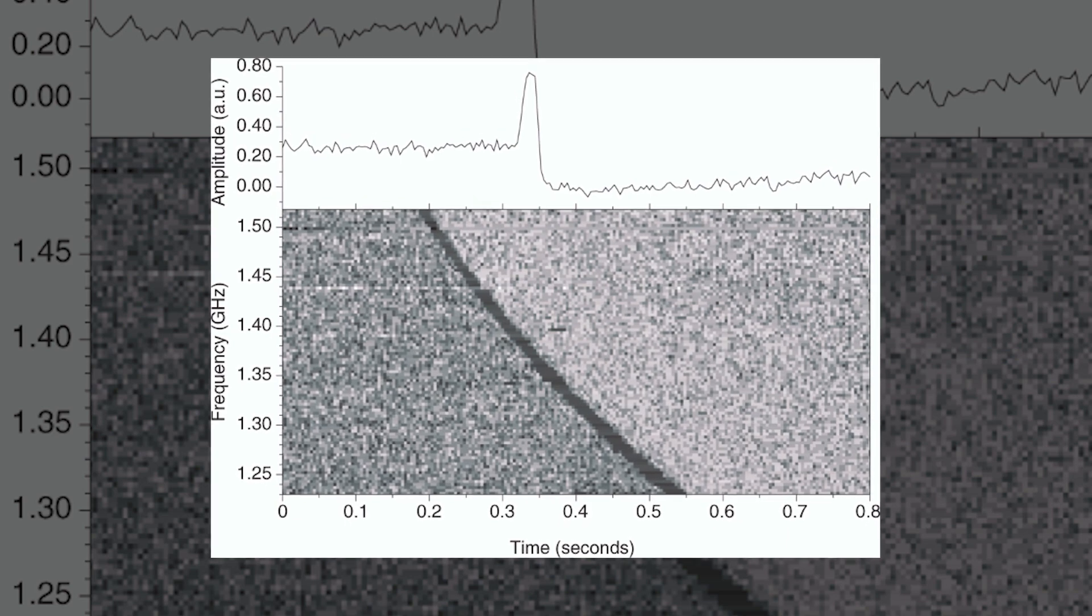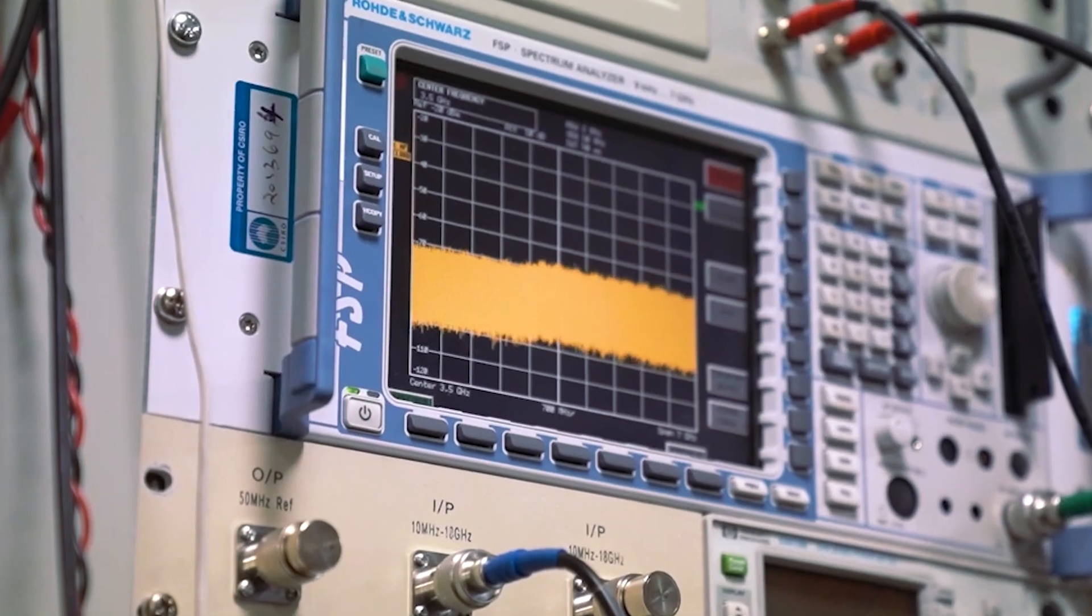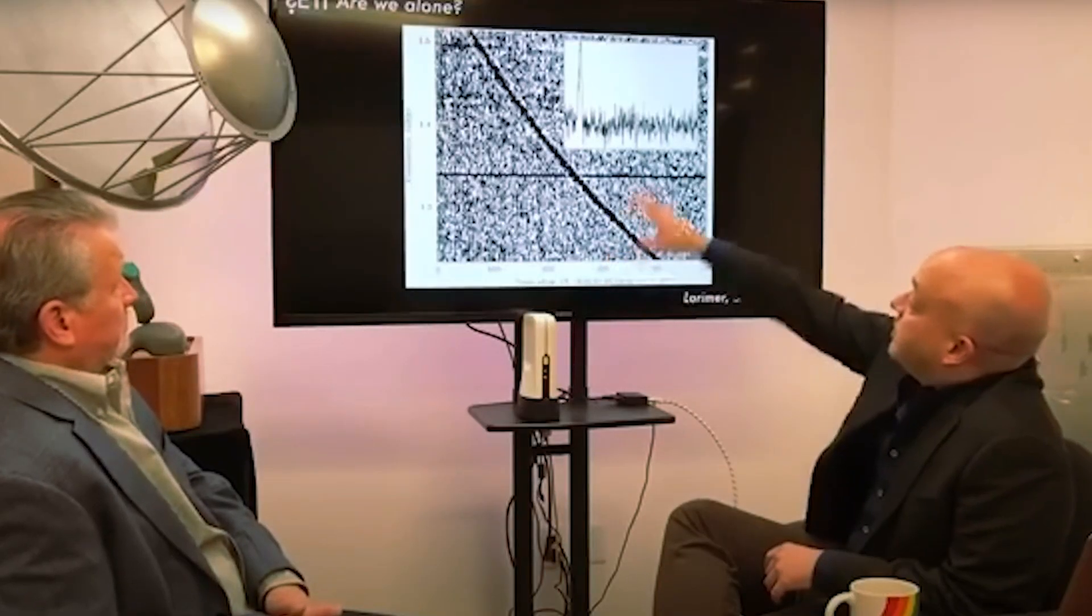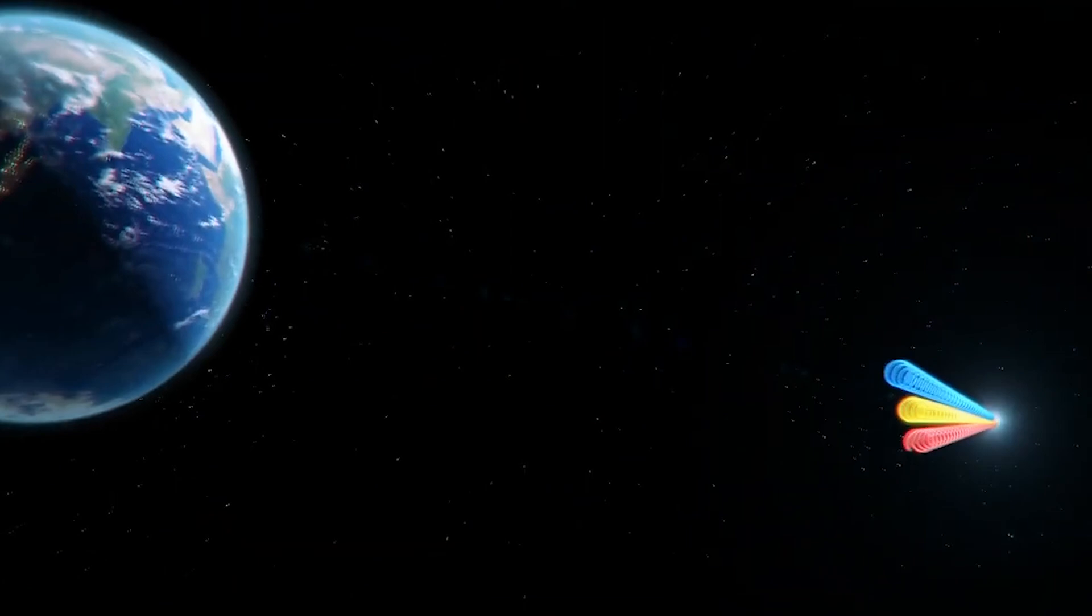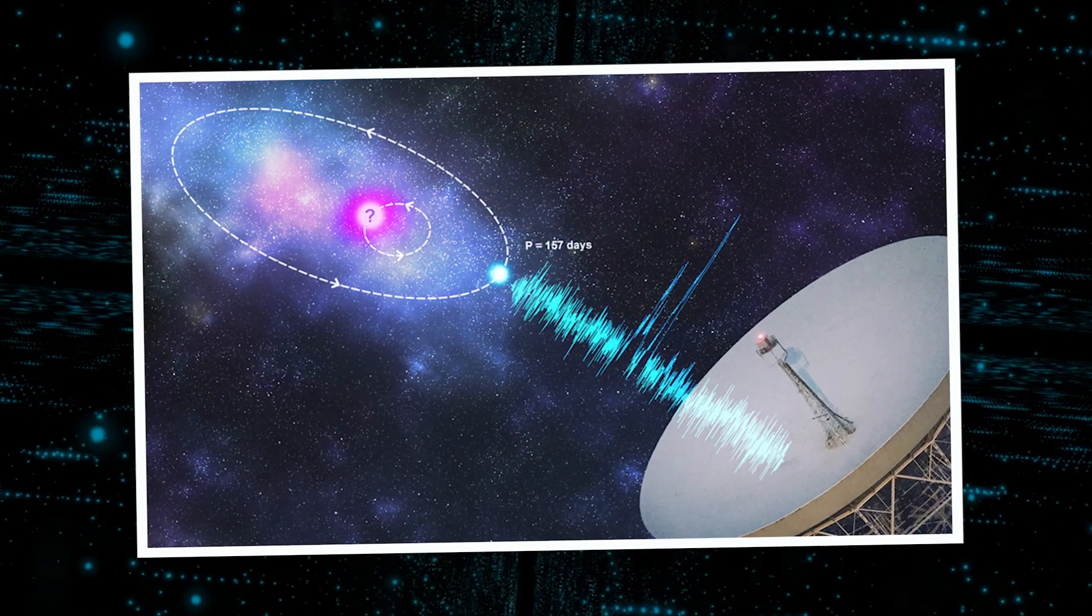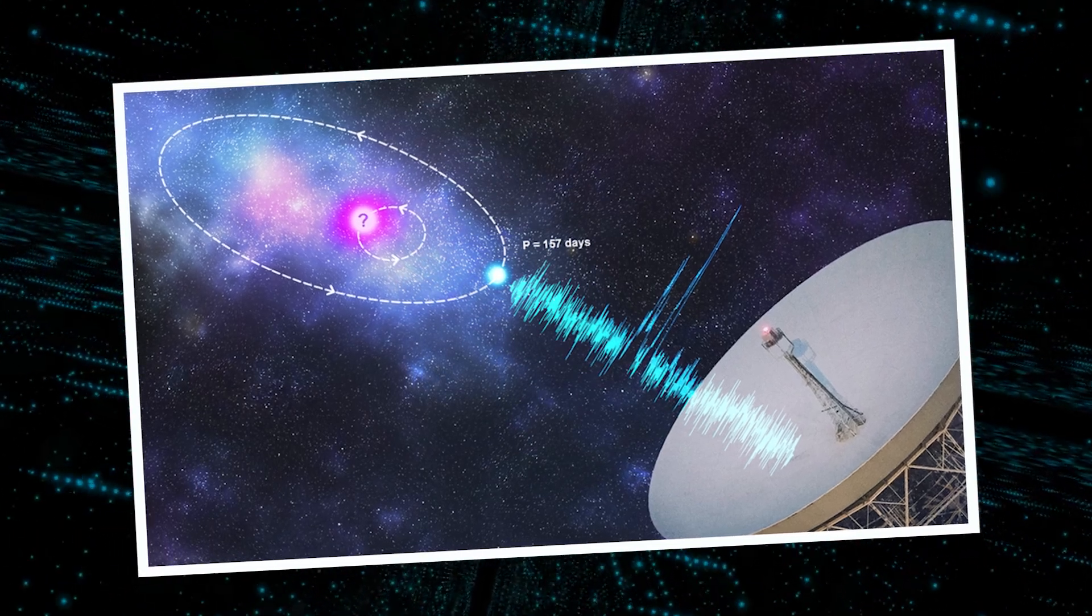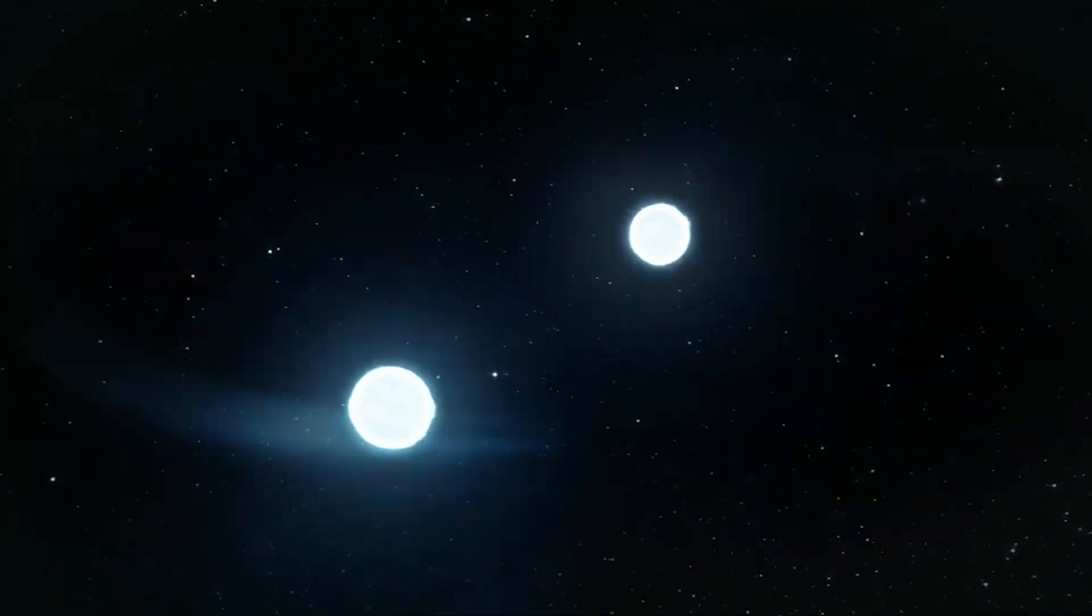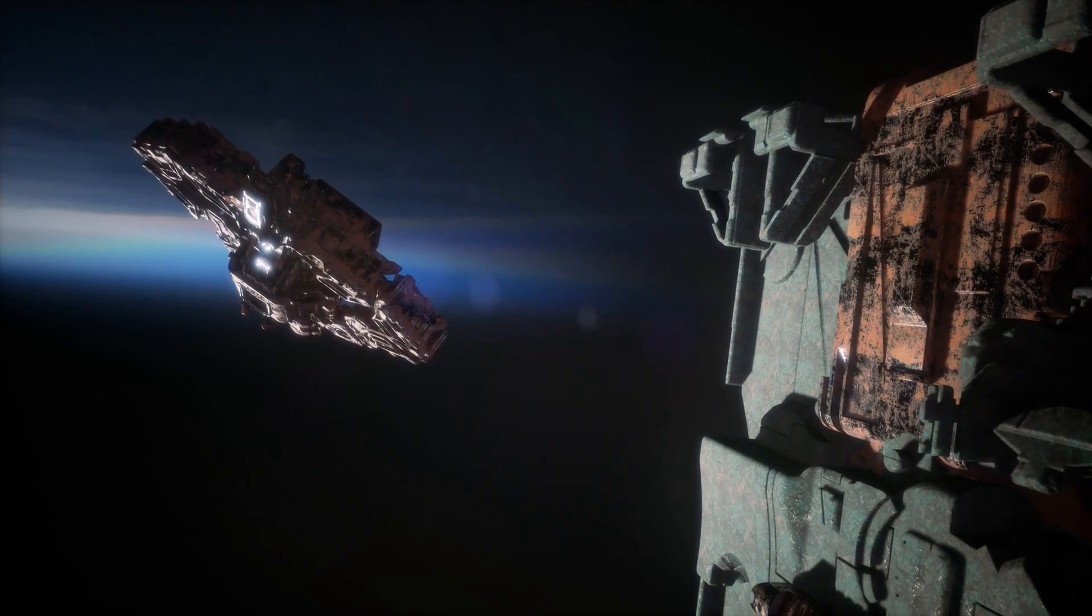Many people were perplexed by the Lorimer burst, and some wondered if it was a technological glitch or an elaborate prank. However, observations confirmed its authenticity, revealing the existence of numerous other FRBs. Despite these advances, the origin and nature of FRBs remain a mystery, with theories ranging from neutron stars and black holes to extraterrestrial signals.